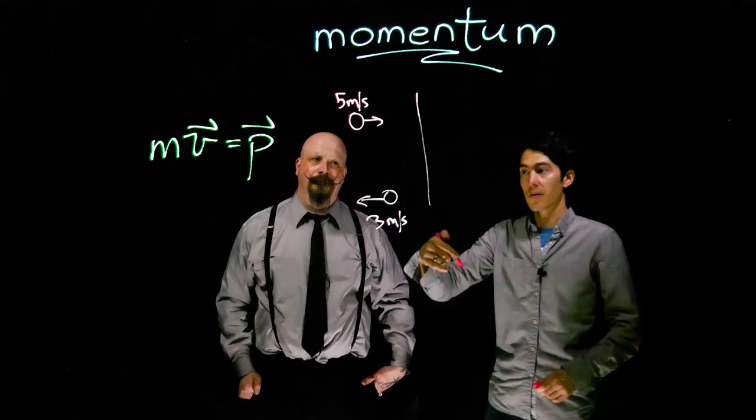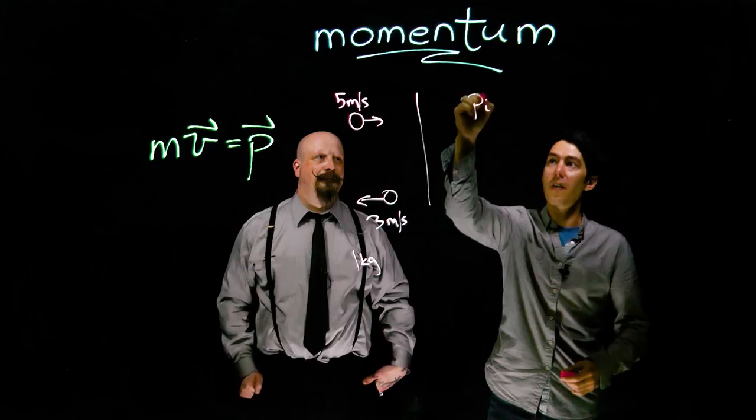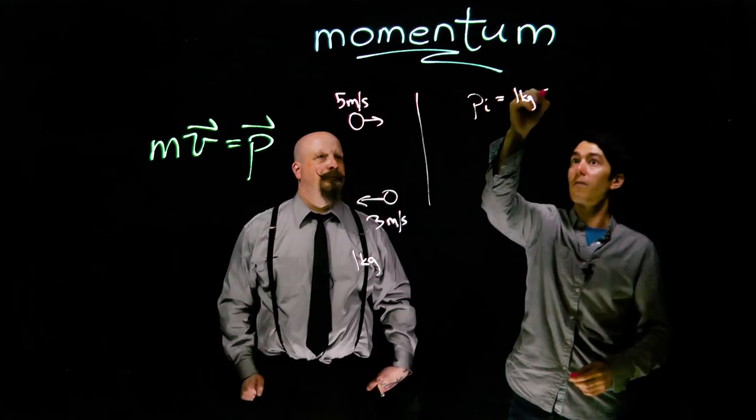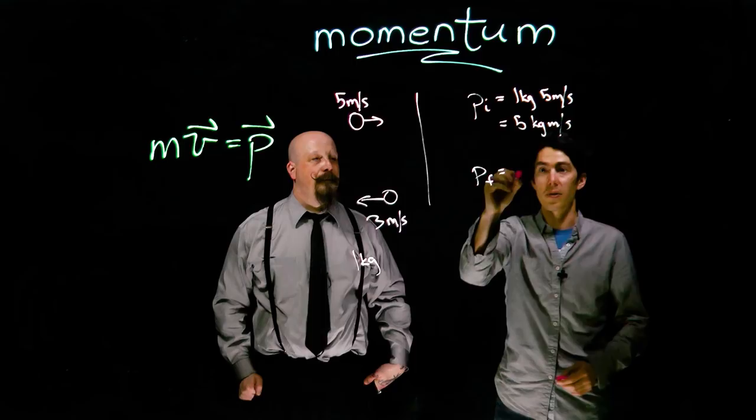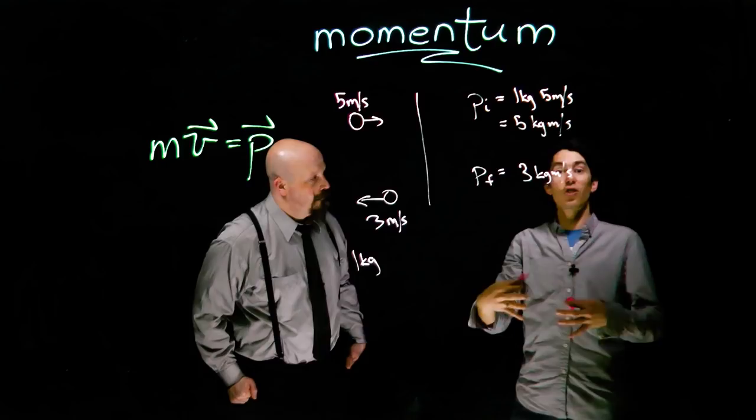There's a change in momentum associated with this. Let's give it a mass, 1 kilogram. And let's look at the initial and final momentum. Momentum is just mass times velocity, so that's 1 kilogram times 5 meters per second, or 5 kilogram meters per second. The final momentum is going to be 1 kilogram times 3 meters per second, or 3 kilogram meters per second.